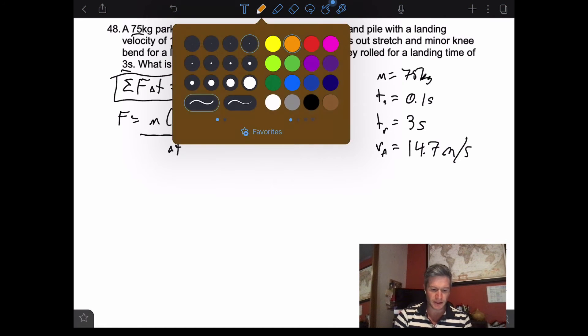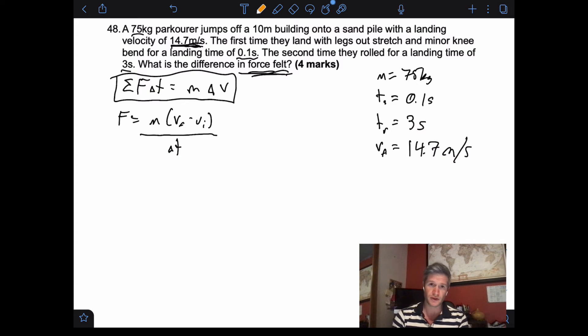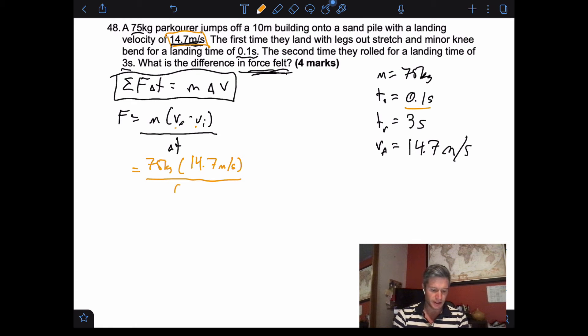So now we can essentially find our values for the two different scenarios and plug in our variables, or our known variables. So mass, 75 kilograms in both scenarios. Velocity final is 14.7 meters per second. But the initial, because they're at a standstill before they started moving, was zero. So the change in velocity is just 14.7 meters per second. And then the time in our first situation is 0.1 seconds. When you calculate that all out, what we get is 11,025 newtons.